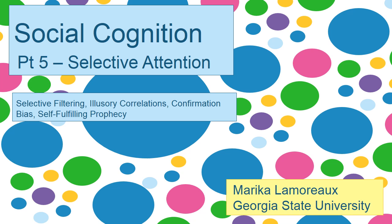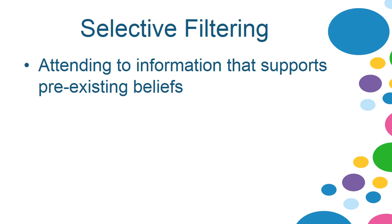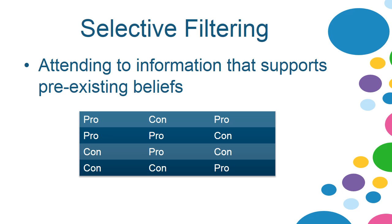And now for our last lecture on social cognition. Selective filtering occurs because we tend to only look at information that already supports our pre-existing beliefs. If I have an attitude with a pro belief and a list of pros and cons, what's going to happen is I'm going to selectively filter out everything that doesn't support my belief. So now all I'm really doing is seeing all these pros and thinking my belief is correct because there's all these things that support it.